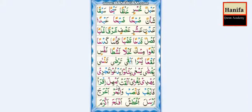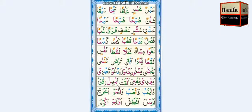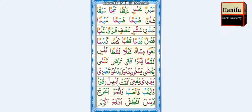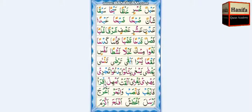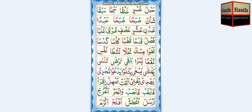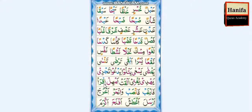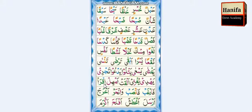Hamza, Mim, Fatha — am. Ha, Lam, Kisra — hil. Am-hil. Hamza, Qaf, Kisra — iq. Ra, Hamza, Fatha — ra. Iq-ra.